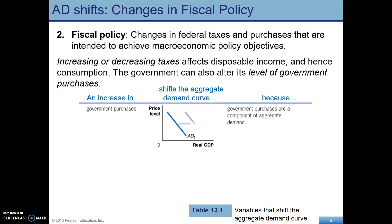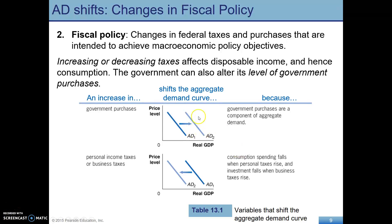Here's the shift from G. When the government spends more, that increases aggregate demand because aggregate demand is C plus I plus G plus NX. So G goes up, and aggregate demand shifts.